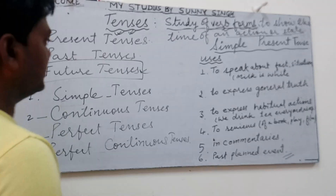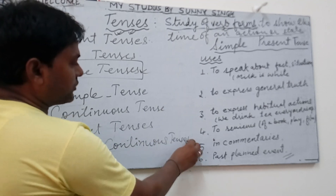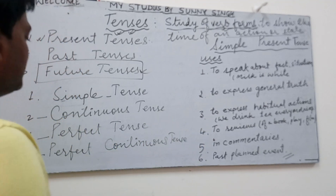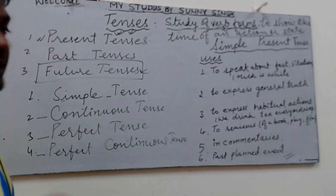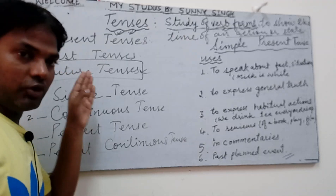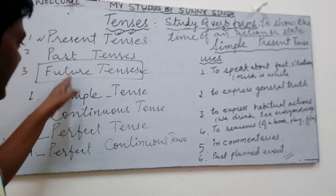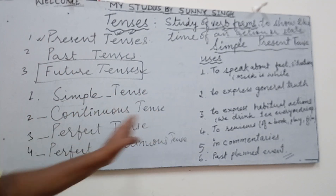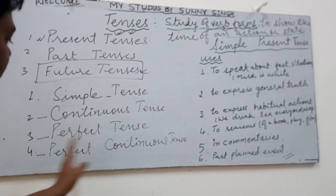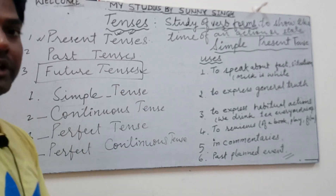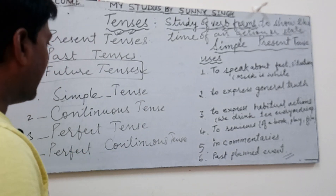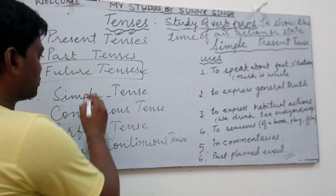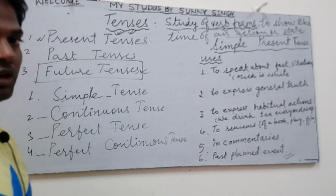For future tense, the four forms are: simple future tense, future continuous tense, future perfect tense, and future perfect continuous tense. Now you should know one very common thing which is an essential part — what the common things are that you should know about each tense type.